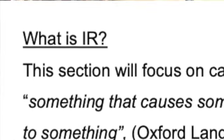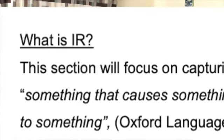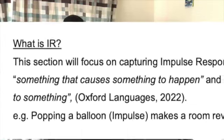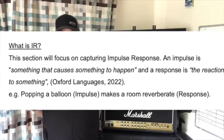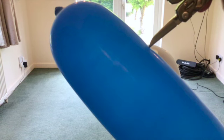So next we're going to be looking at impulse response. An impulse is something that causes something to happen; a response is a reaction to something. For example, popping a balloon would be an impulse, and making the room vibrate would be the response. So when a sound is generated within a room, the characteristics of the space dictate how the sound is propagated.